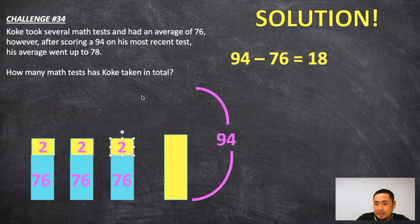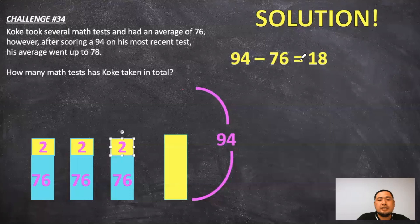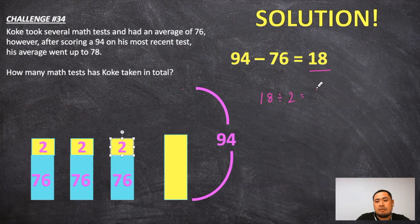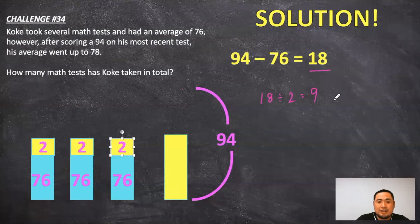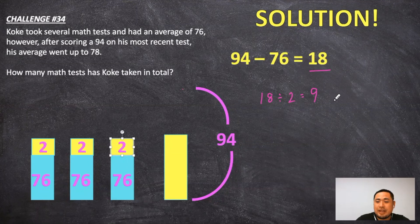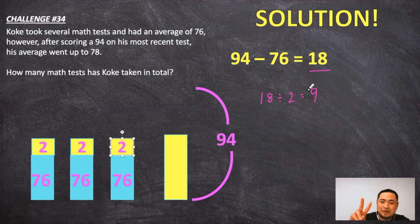Now, how many tests did it take me to get there? Well, because the difference was 18 points, we can take the 18 divided by two. And that will give me how many tests I had to take to get there. So I had to take a total of nine tests in order to raise my average by two points.